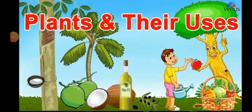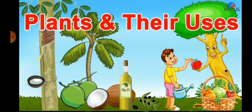Good morning kids! We learned about different types of plants and different sizes and shapes of leaves. Now we will move ahead and learn today how plants are useful to us. Plants give us many things. First and foremost, the most important thing for every living organism on this earth — we get oxygen from the plants.